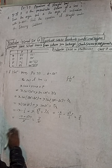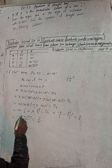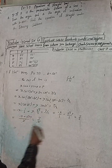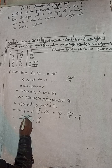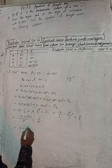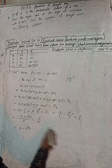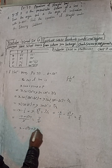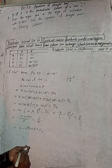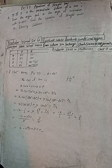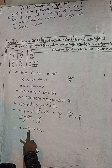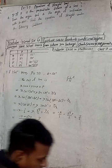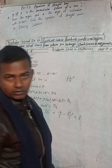Rearranging by taking terms to the right side: minus x becomes plus x, plus √3 y becomes minus √3 y, and 3 stays on the right as plus 3 equals 0. So the required solution is x minus √3 y plus 3 equals 0. This matches the book answer for question 3f.